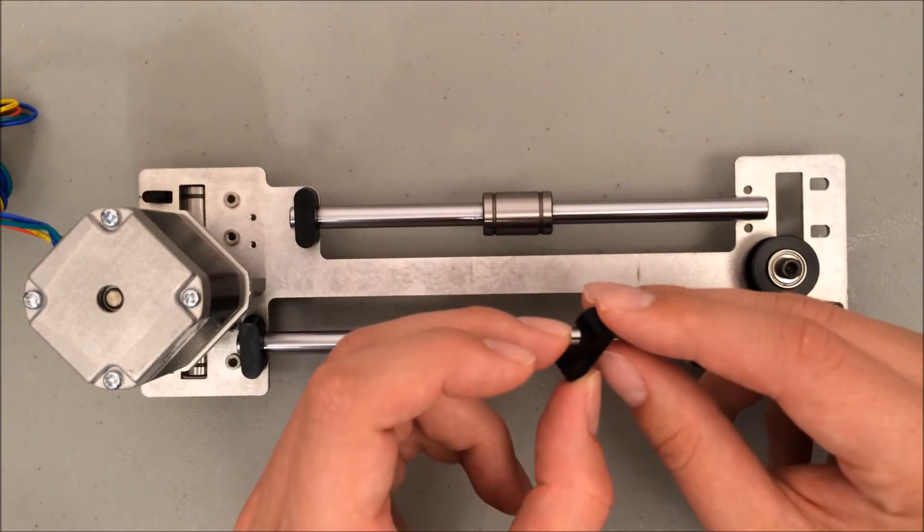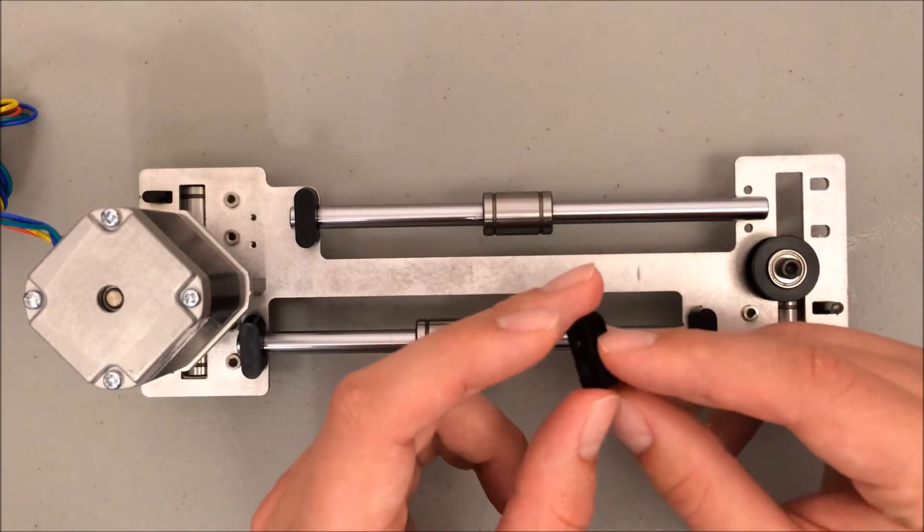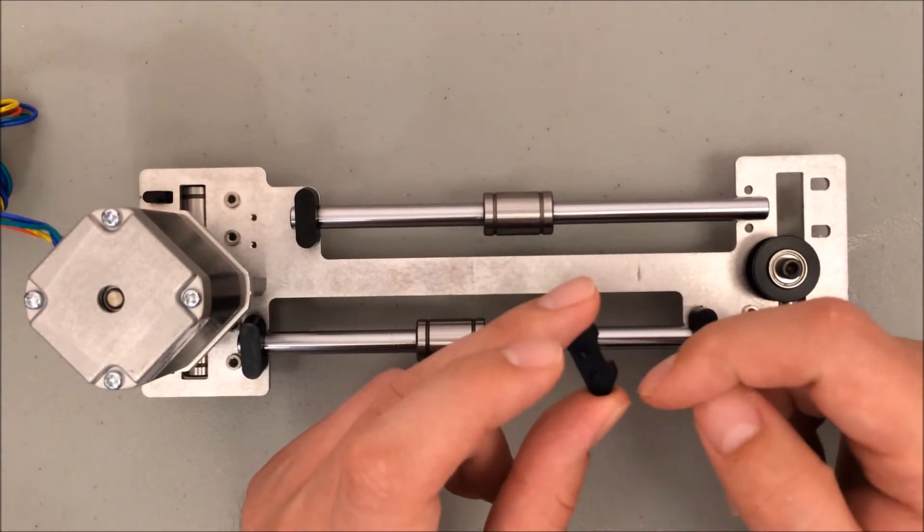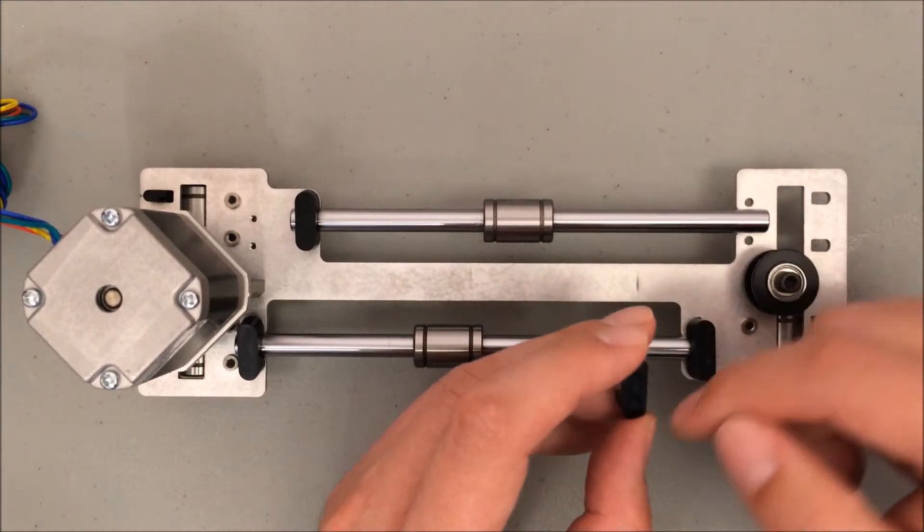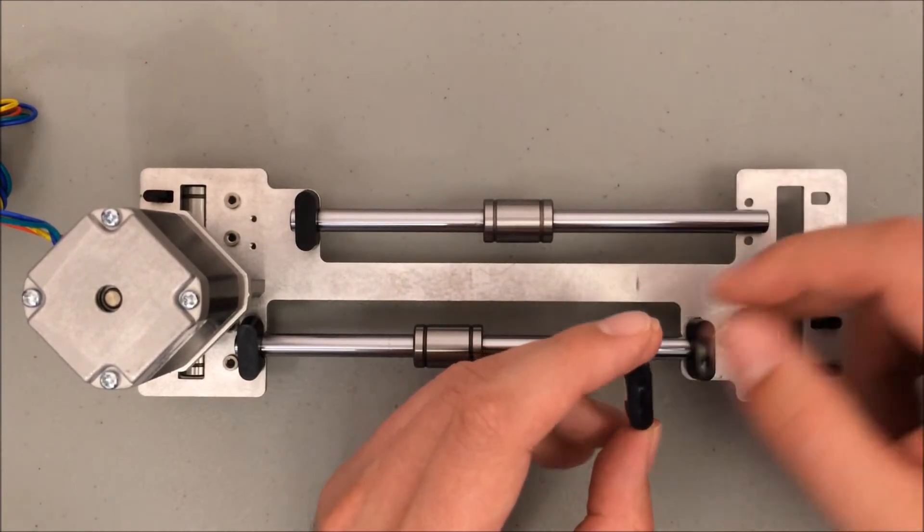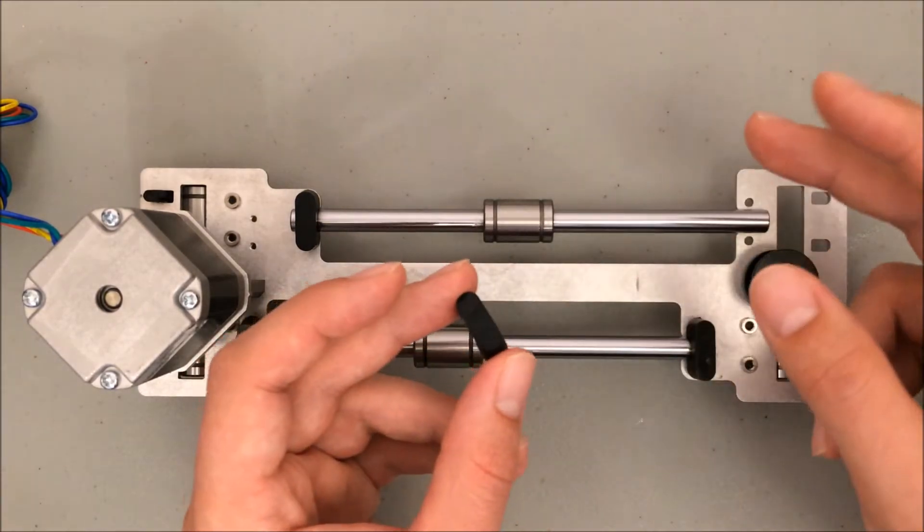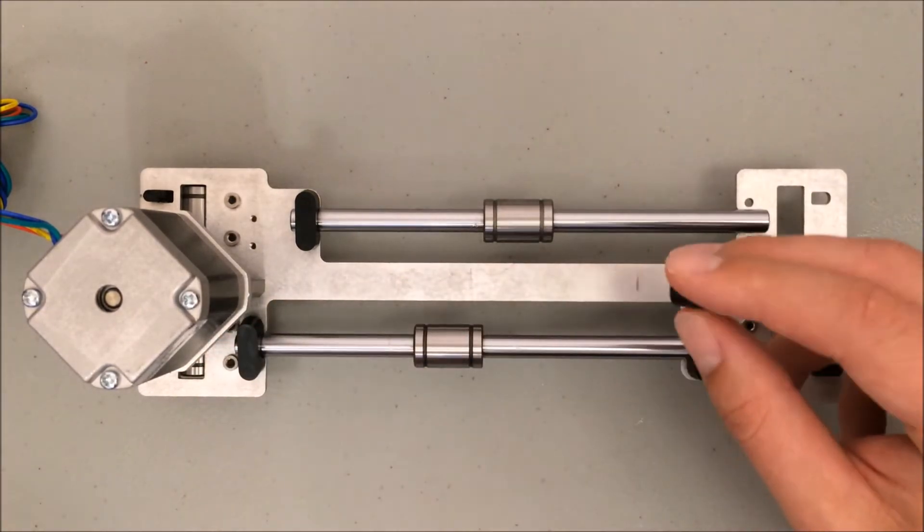I have rounded rod ends. You may have square ones. If you have square ones there should be one rod end that's missing a corner and that's to give you clearance from this idler pulley. So make sure that missing corner faces this idler pulley. If you have the round ones you don't have to worry about it, but just in case you have the square ones now you know.